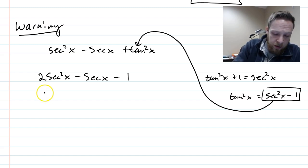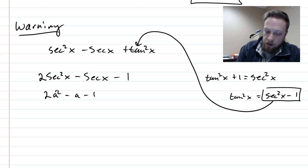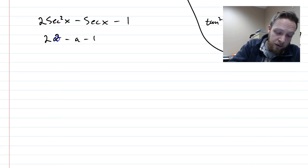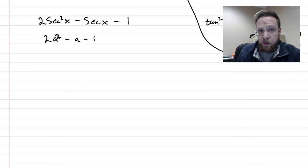So now I have an expression only involving secant. And I'm going to think of it like 2a squared minus a minus 1.